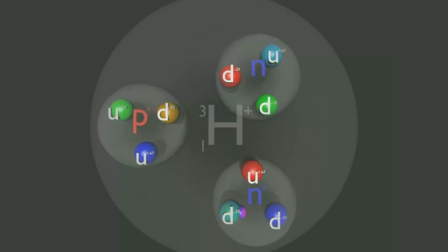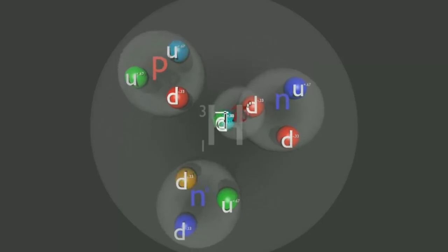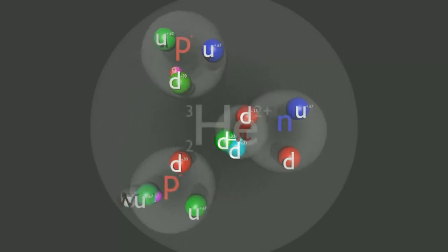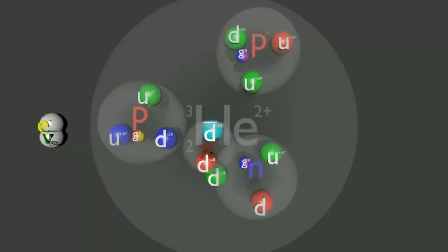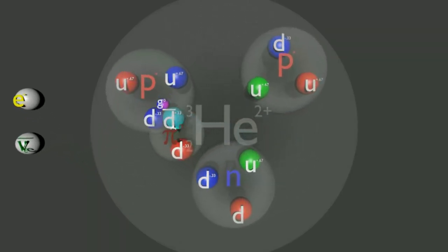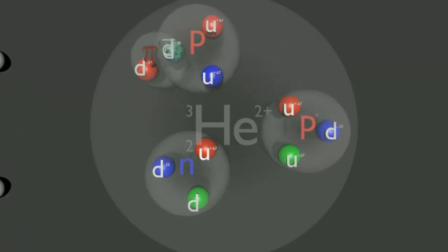So, let's take a look at the decay now. It's beta minus decay, so it emits a weak minus boson, which decays into an electron anti-neutrino and an electron, and one of the down quarks transforms into another quark.